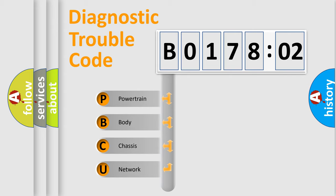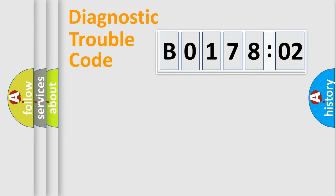We divide the electric system of automobile into the four basic units: Powertrain, body, chassis, network.